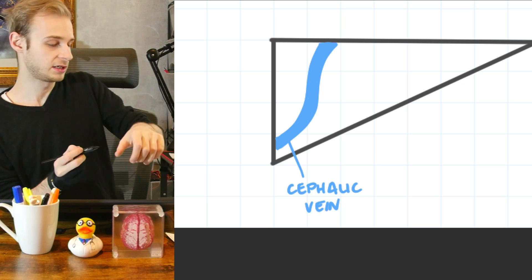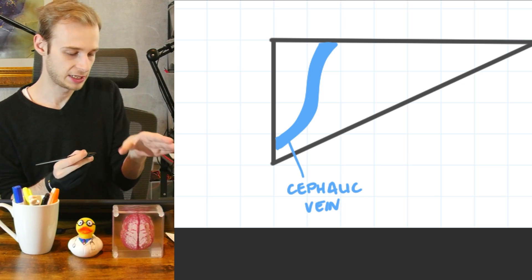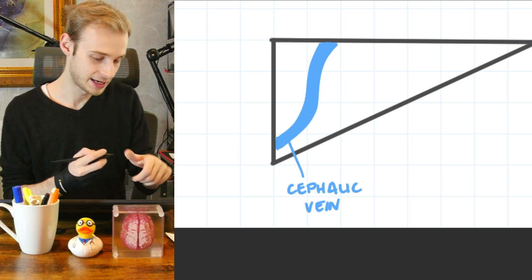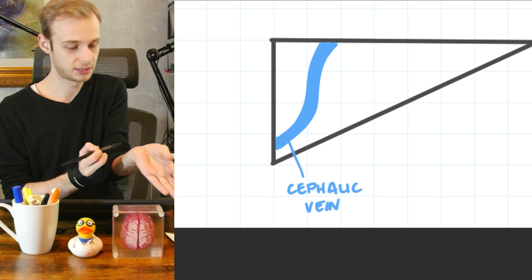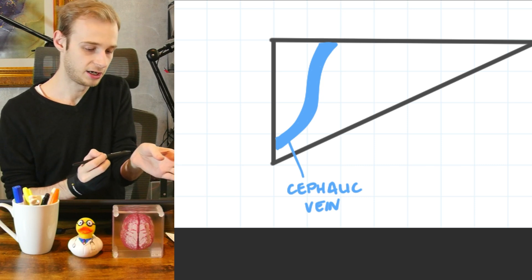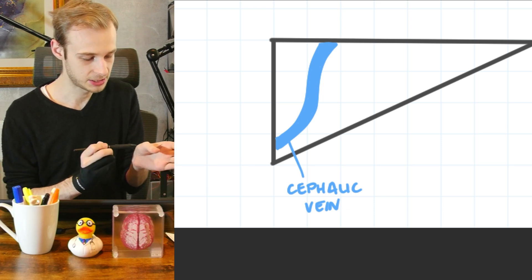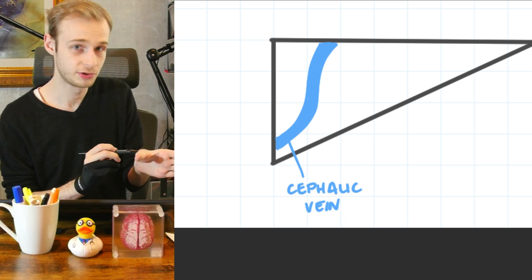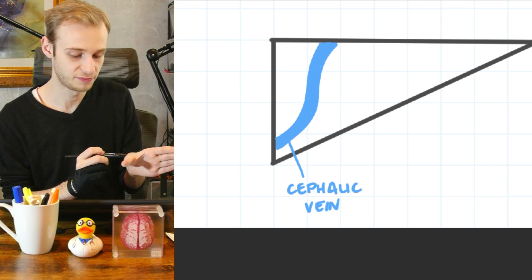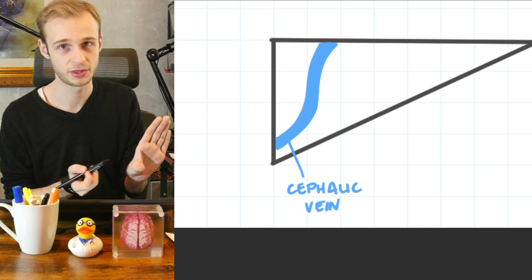So the cephalic vein is one of the two really big veins that runs down the arm. Because I'm quite skinny and pale, I can actually find this vein relatively easy on myself. I can find it tracking up my arm. It comes up across the base of my thumb and then travels just as we've drawn through the base of the anatomical snuffbox and continues out the top, up the side of my thumb.